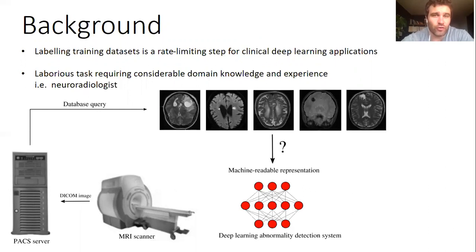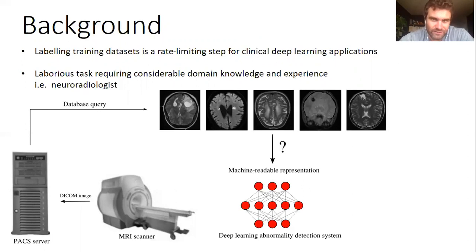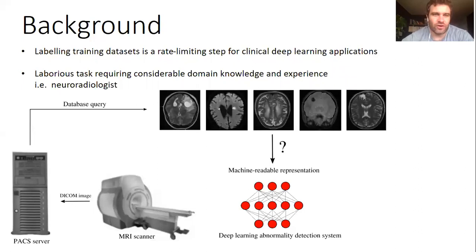Even for expert neuroradiologists, manual labeling is an incredibly laborious task. In our experience it takes clinicians up to half an hour per examination to label images into granular categories that you might want a downstream classifier to incorporate — for example, mass, acute stroke, or vascular abnormality — so you're going to be waiting probably a few years to generate datasets of even a few thousand labeled scans in this way.